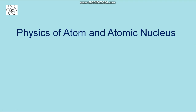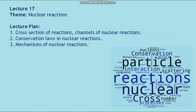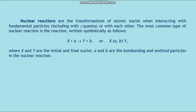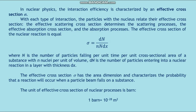The subject of physics of atom and atomic nucleus, lecture number 17: nuclear reactions. Nuclear reactions are the transformations of atomic nuclei when interacting with fundamental particles, including gamma quanta, or with each other. The most common type of nuclear reaction is written symbolically as X plus A → Y plus B, or X(A,B)Y, where X and Y are the initial and final nuclei, and A and B are the bombarding and emitted particles.